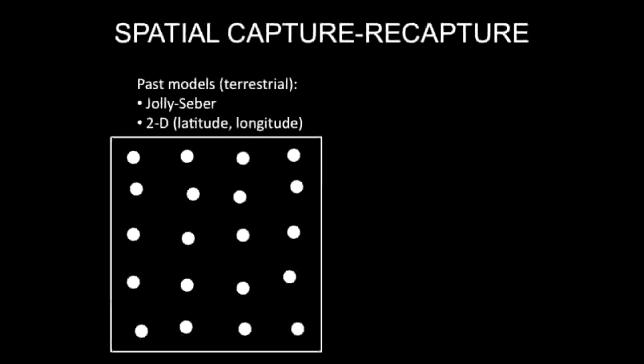We developed a spatial capture-recapture model that estimates both survival and location of tagged individuals from data collected along a linear array of continuous monitoring stations — in our case, migratory fish in a river. Our model builds on the basic framework of Jolly-Seber open spatial capture-recapture models developed for two-dimensional terrestrial detector arrays, such as hair snares or camera traps.